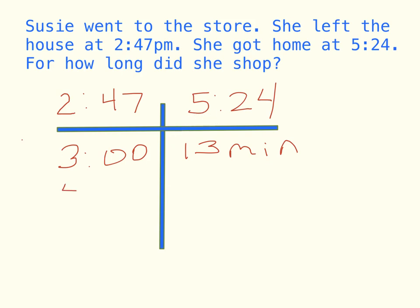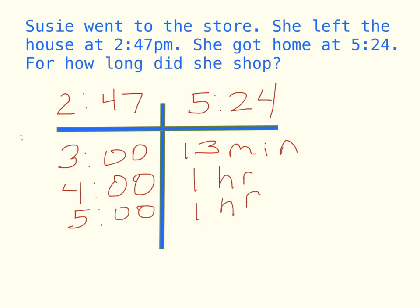So now that we're at 3 o'clock, it's easy to figure out how to get to 5 o'clock. If I add 1 hour, it's 4 o'clock — I write 1 hour over here. Then I need to get to 5 o'clock, which is another hour. And then I know I need to get to 5:24, so from 5 o'clock to 5:24 is 24 minutes.